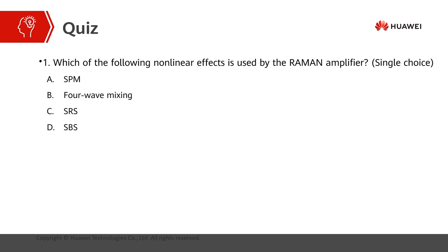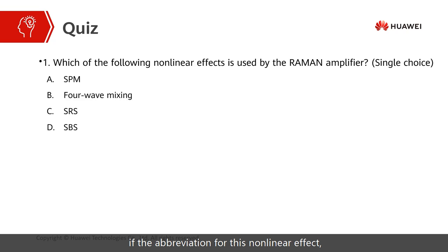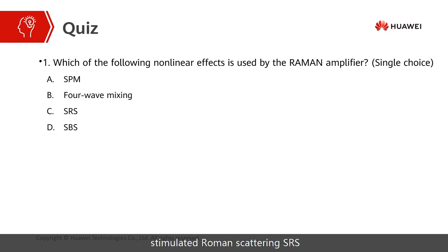The options are: A. SPM, B. four-wavelength mixing, C. SRS, D. SBS. If you know the abbreviations for these non-linear effects, you can answer easily. The answer is C — stimulated Raman scattering (SRS).